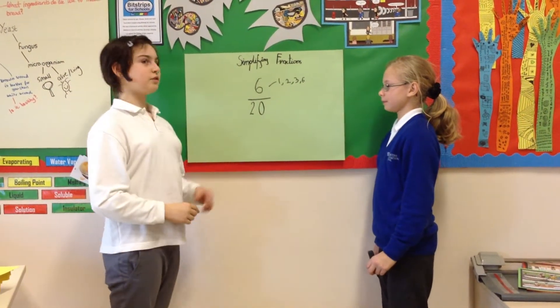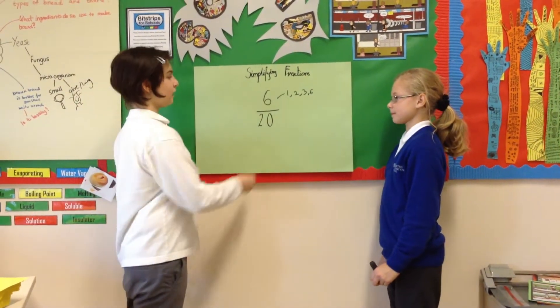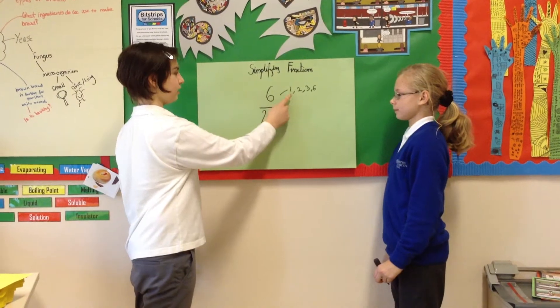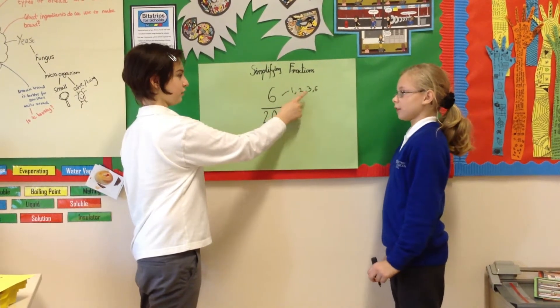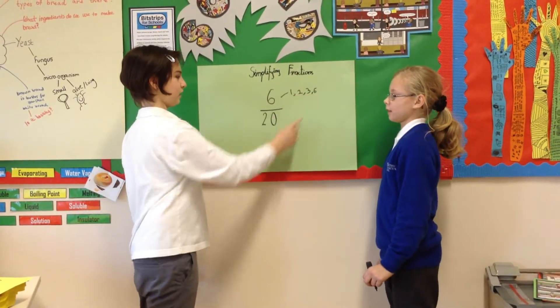So what you have to do is find the factors of six. As we already did, they are one, two, three, and six.